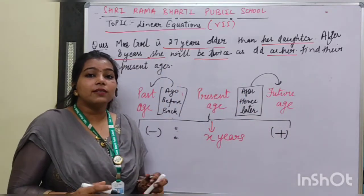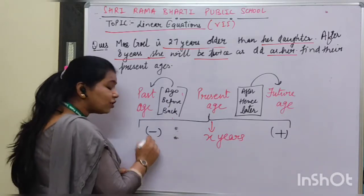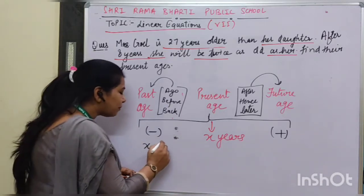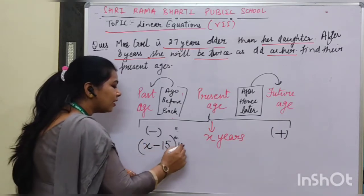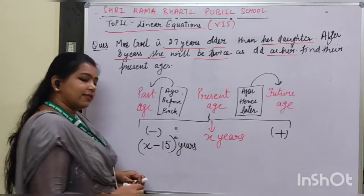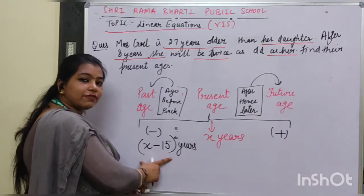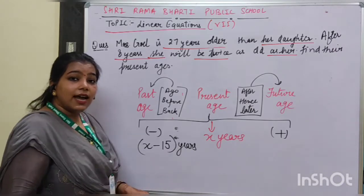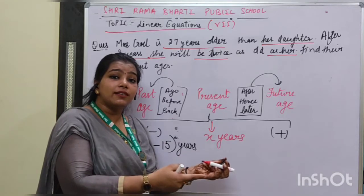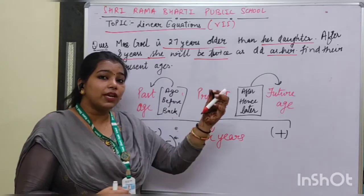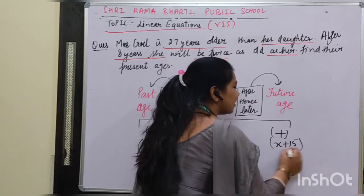So if I ask what is my age 15 years back, you take my age as x and subtract 15 to get x minus 15 — that is my age before 15 years. On the other hand, if I ask what will be my age after 15 years, my age will increase, so it will be x plus 15 years.